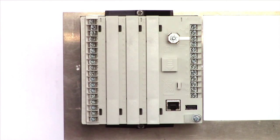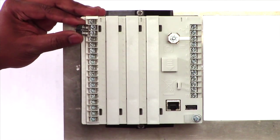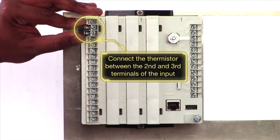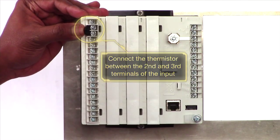To connect a thermocouple to the analog input module first connect the thermistor assembly between the second and third terminals of the input you wish to use.